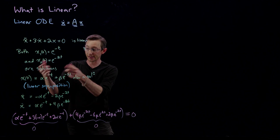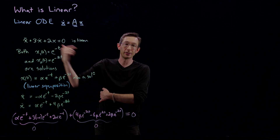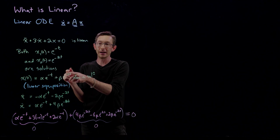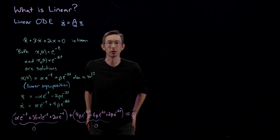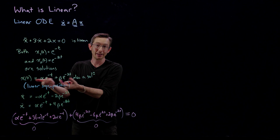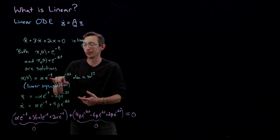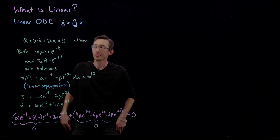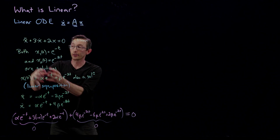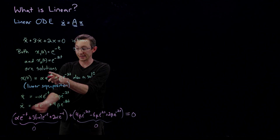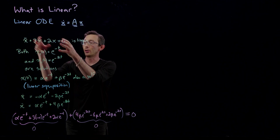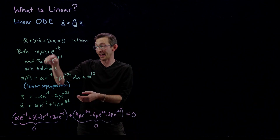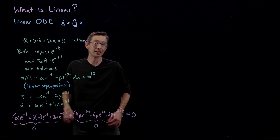This confirms that if I have two solutions of a linear differential equation and add them in any combination — α times the first plus β times the second — plugging that into the equation essentially separates all the alpha terms, which sum to zero because x₁ was a solution, and all the beta terms, which also sum to zero because x₂ was a solution. Adding them together is therefore also a solution.